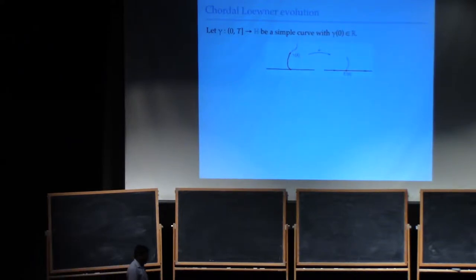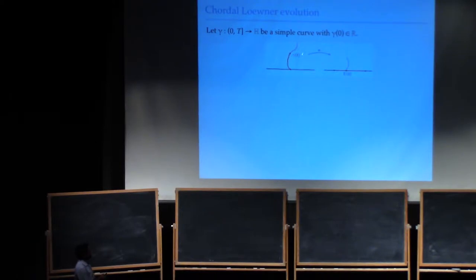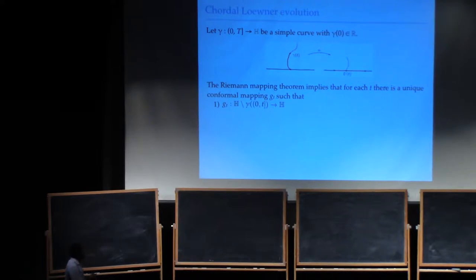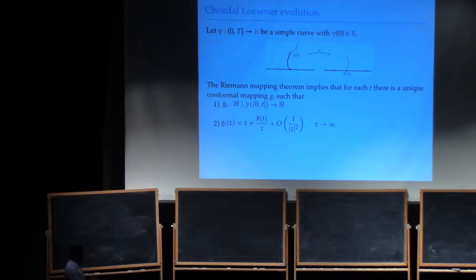Let me tell you a little about Löwner theory. The Löwner evolution is a constructive way of building up conformal mappings. The standard way it's presented is that you're given a simple curve in the upper half plane, and you want to build up a family of conformal mappings of the region with the simple curve in there, mapping it to the upper half plane by gradually wiping out the curve. The Riemann mapping theorem implies that for each T there's a unique conformal mapping which maps the upper half space minus the portion of the curve onto the upper half space. To get uniqueness, you normalize at infinity — that's the hydrodynamic normalization — and that number up there is called the half plane capacity.